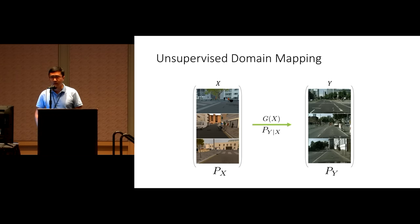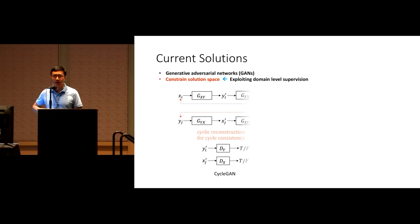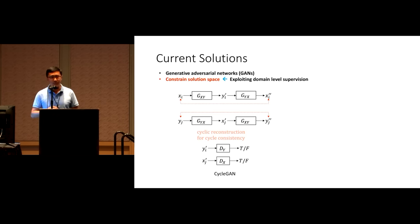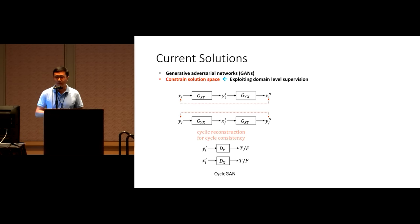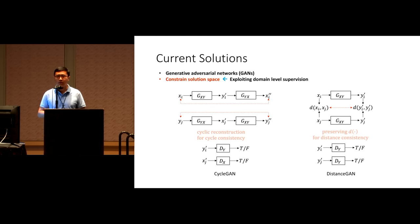Existing methods try to add constraints to restrict the solutions. The pioneering work CycleGAN enforces that the translated image can be reconstructed back to the original input image, forming cycle consistency. The recent work DistanceGAN enforces pairwise distances between input images to be preserved after translation so that geometric structures are better preserved. Our motivation: instead of working on the given image dataset, we first apply a predefined geometric transformation to construct a new dataset, then train two GANs independently on these two datasets.